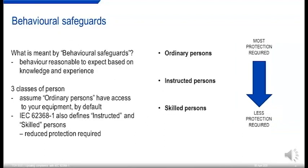Behavioral safeguards involve the behavior that's reasonable to expect based on the knowledge and experience of the person coming into contact with the equipment. We classify people in three ways. We should assume that ordinary persons have access to the equipment by default. 62368 also defines instructed and skilled persons, who have a reduced amount of protection required because they have additional knowledge.